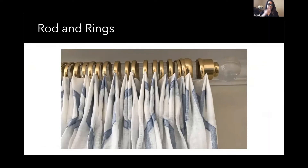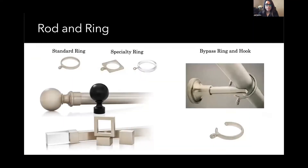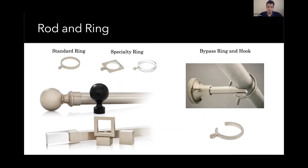Now we're getting into rods and rings, which is a very stylish option for drapery hardware. Rohit's rods and rings collection comes in different diameters — three-quarter inch, one inch, one and three-eighth inch, and two inch — and multiple finishes. The majority of DECO and DECO products are made of solid brass, which is not the case with other sources. All rings, brackets, and finials are solid brass, giving much more value and a higher-end presentation.